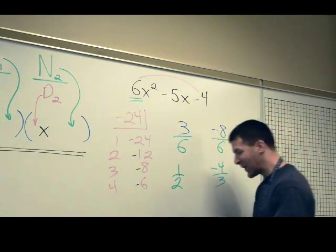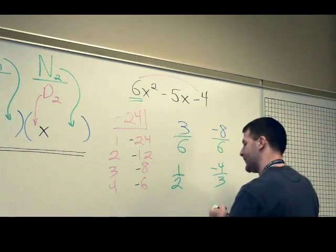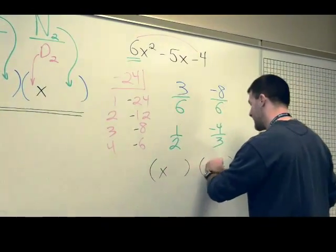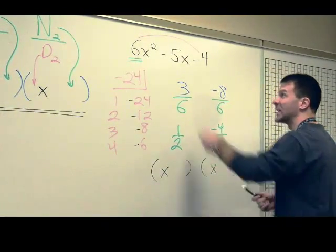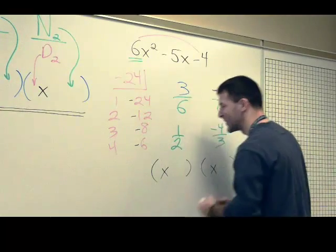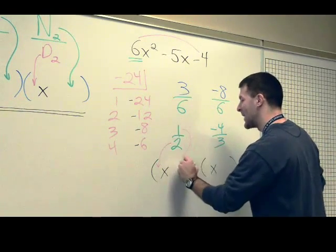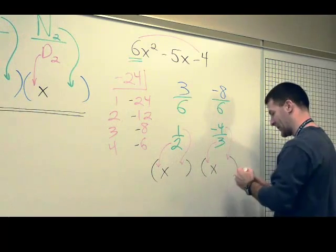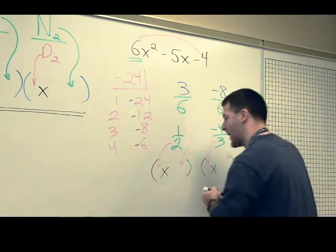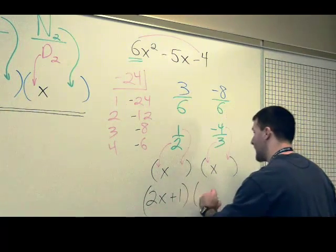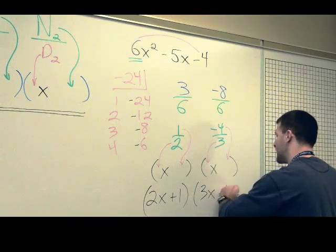From the fractions, we are now ready to actually do our factoring. So each fraction gets its own parentheses set. We already knew there had to be x's in or near the first spots, because of the 6x squared at first. Denominators go in front, numerators after. Denominators in front, numerators after. Final answer: 2x plus 1 times quantity 3x minus 4.